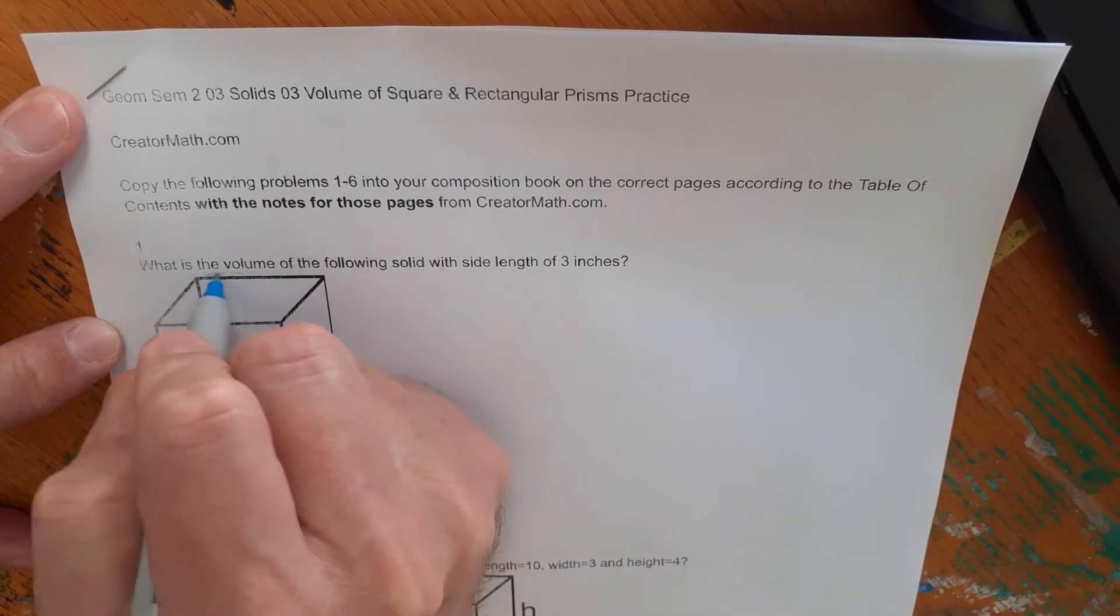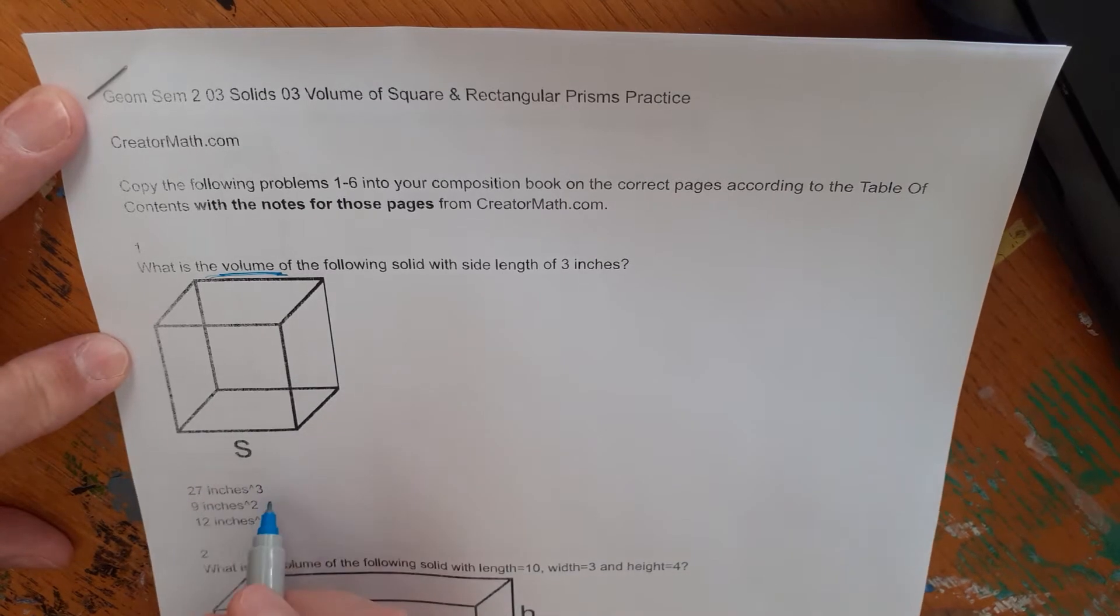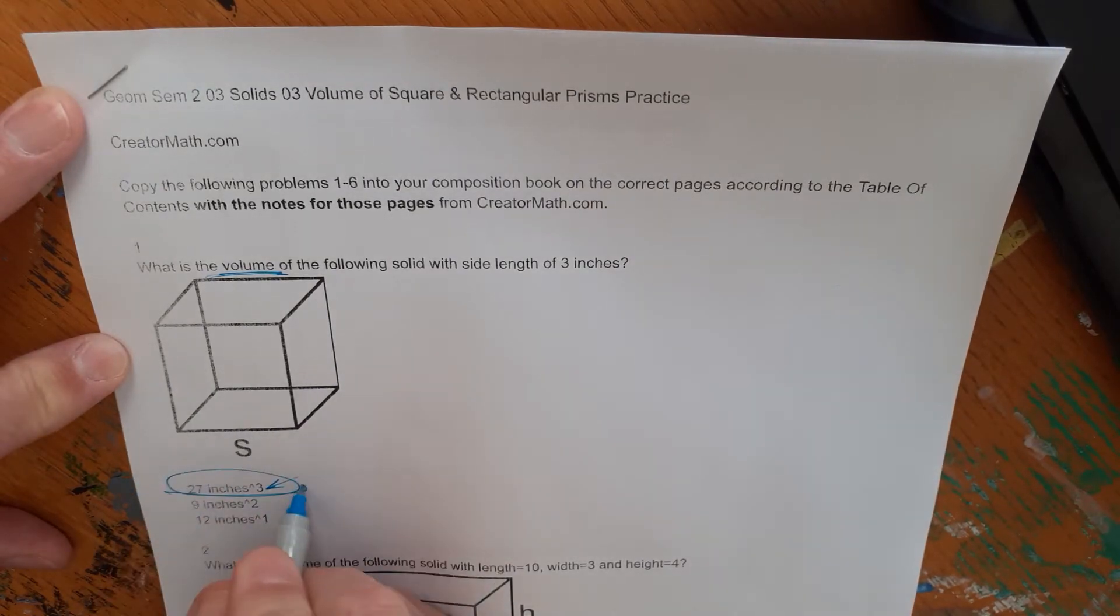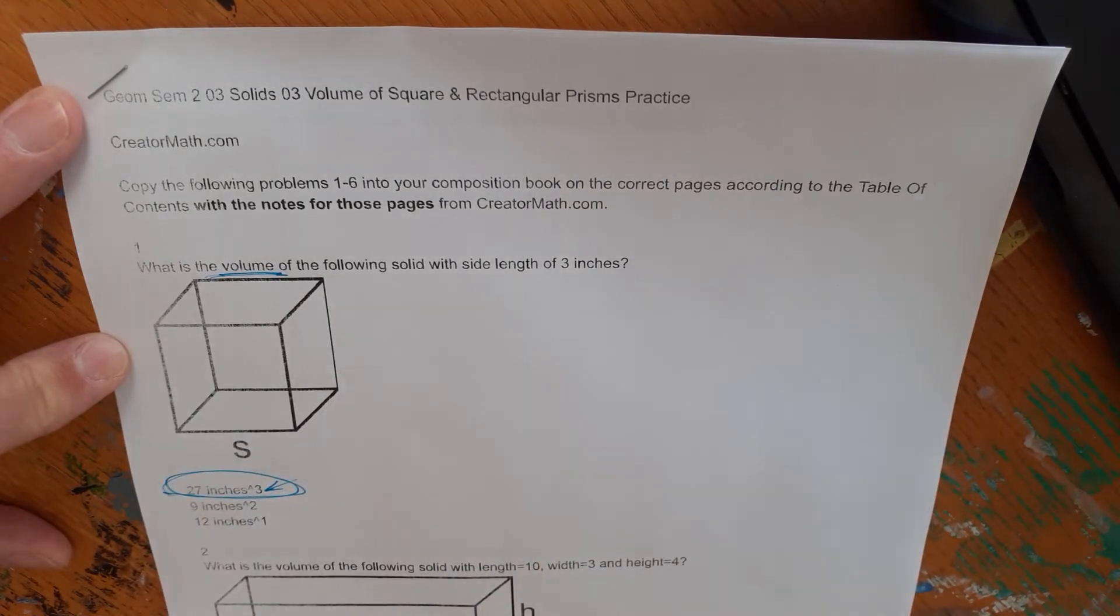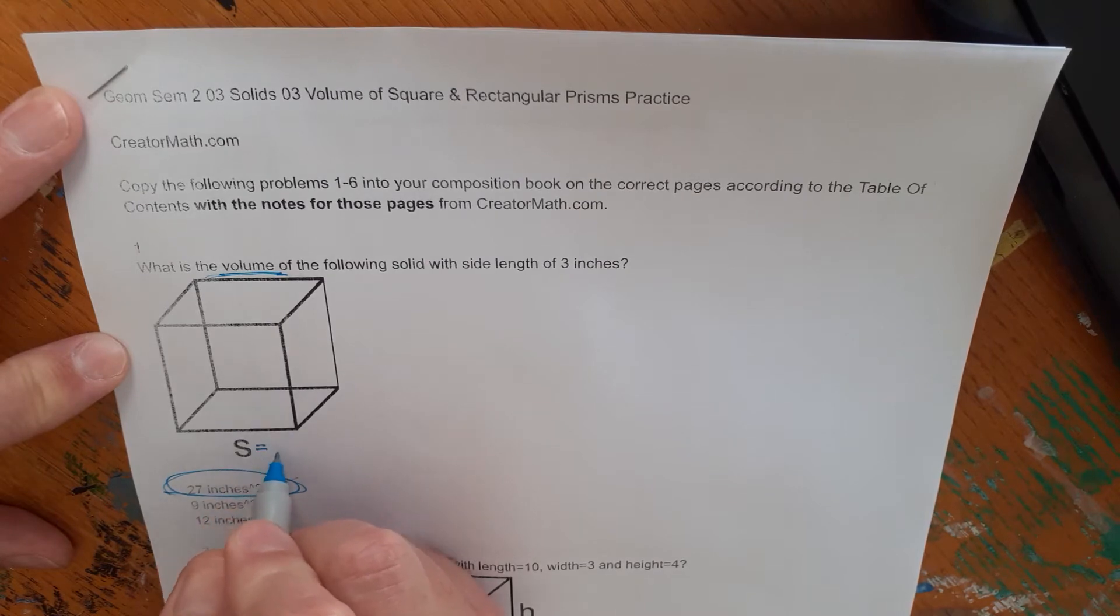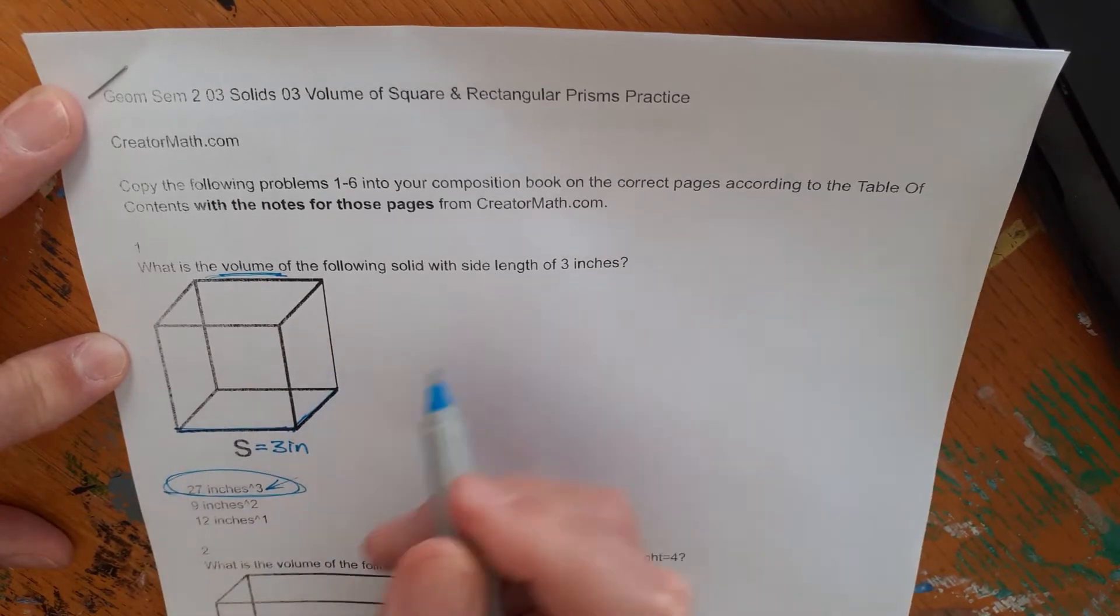They're talking about volume so I can expect to have units to the power three and if you look there's only one answer with units to the power three. I can answer this. If I know enough about volume I can answer this without even calculating the problem. But let's go ahead and do that. If they're saying the side length is three inches that means s is equal to three inches right here. Here's an s. That would be length.